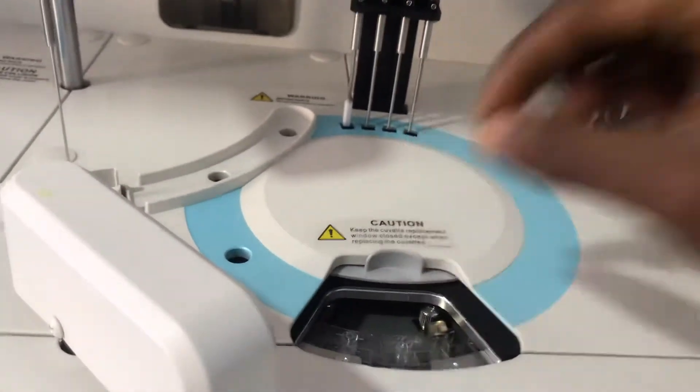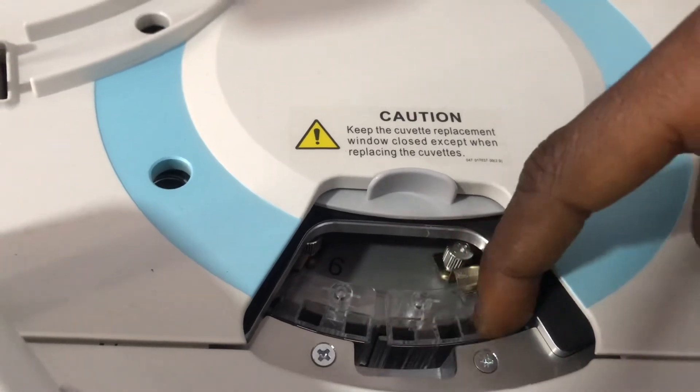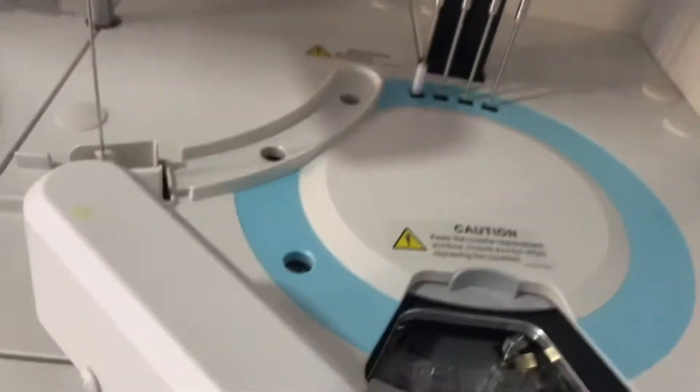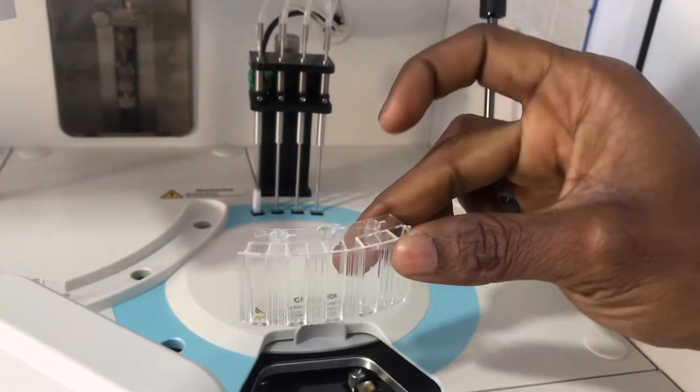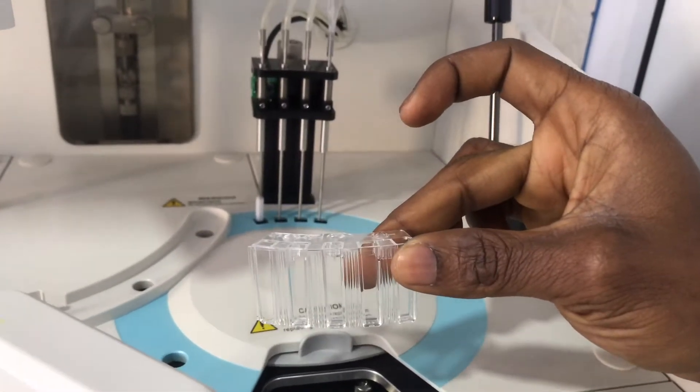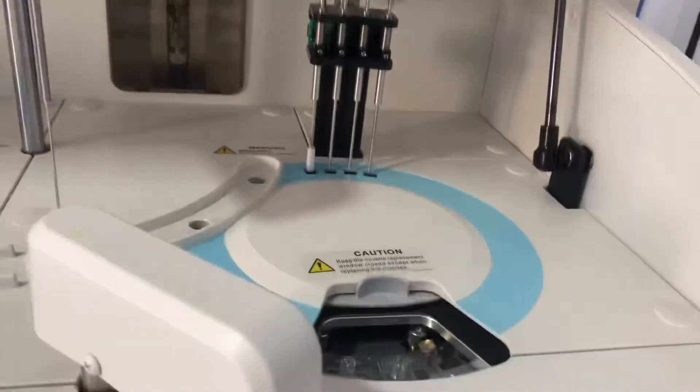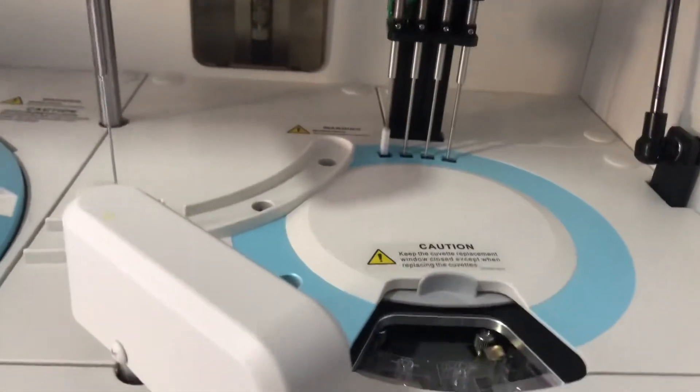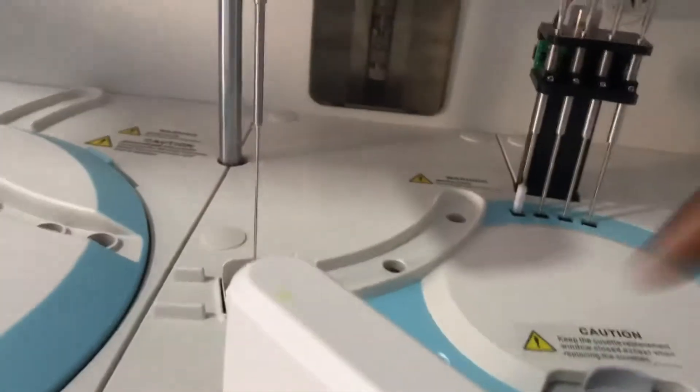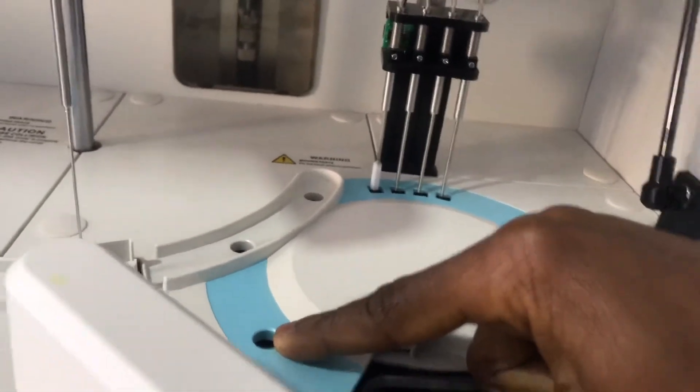Basically this is what we call the reaction carousel. In here we have cuvettes. These are cuvettes that we have here—they are in segments. Let me show you how it looks like. They are in there like that. You have five here and then there's eight of these in there. It's a turntable that moves around to wherever they are needed and then the reactions take place. Basically, this is where the mixing occurs. Anytime the cuvettes are moved to this position, you should know that there is mixing.